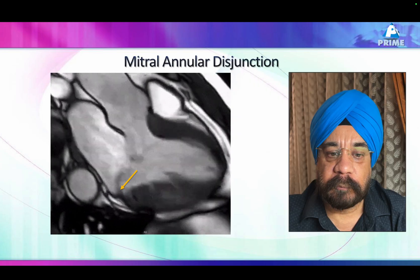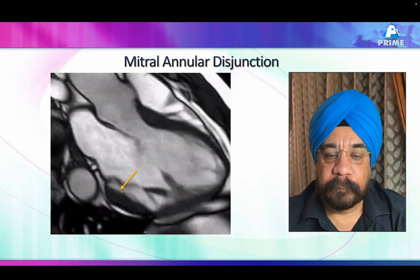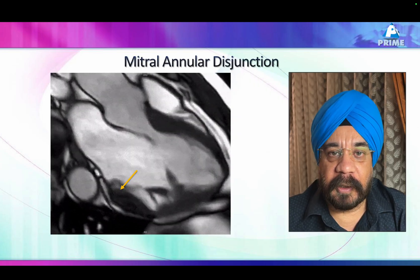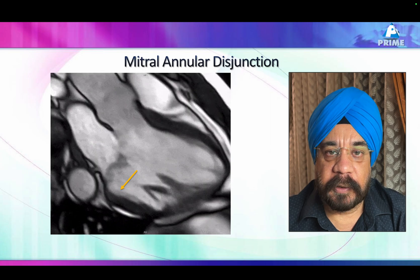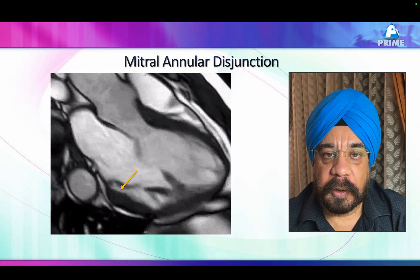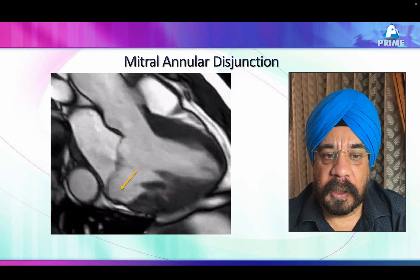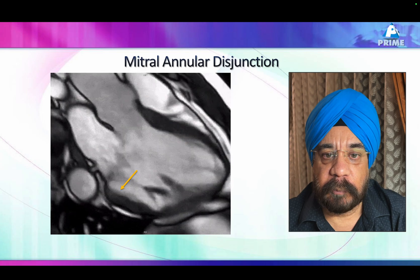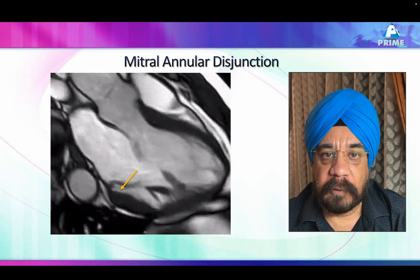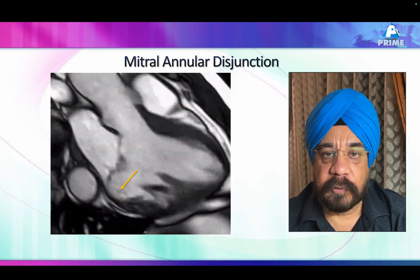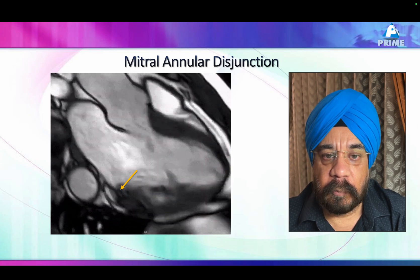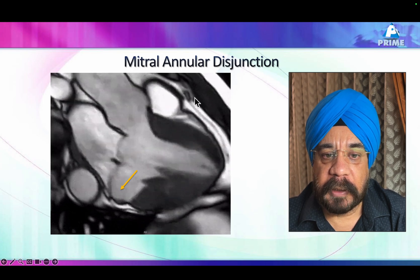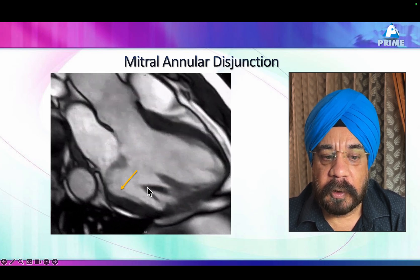There is another new entity called arrhythmogenic mitral valve prolapse, and it is actually caused by mitral annular disjunction. What is this terminology of mitral annular disjunction?